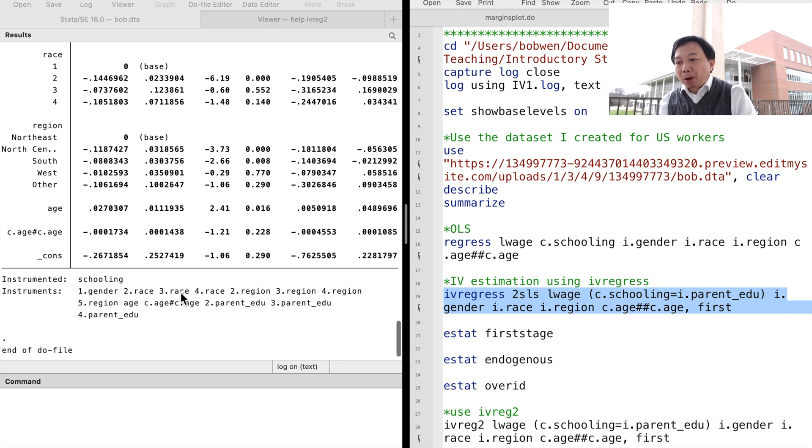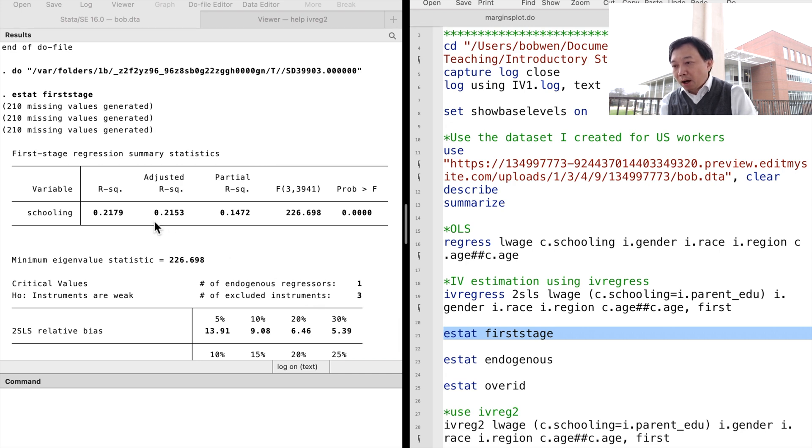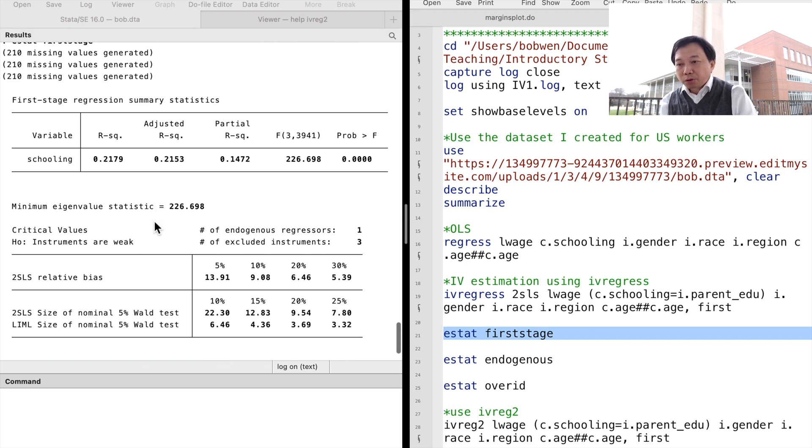We use the post-estimation commands to obtain the diagnostic statistics. We type estat firststage. The partial R-squared tells us how strong the instrument variable alone can explain the endogenous variable.